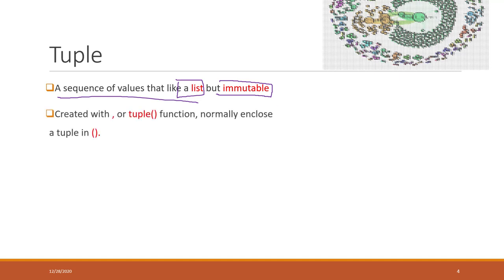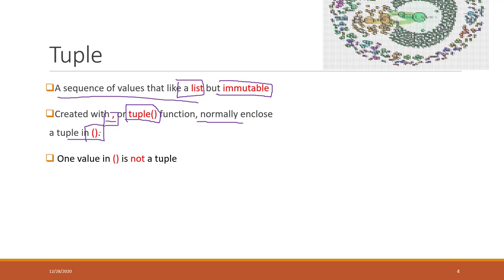To create a tuple, we use a comma, or we can use the built-in tuple function with parentheses. As a convention, we put a tuple into a pair of parentheses. But remember, what really defines a tuple is the comma, not the parentheses. This means that a single value within parentheses without a comma is not a tuple.